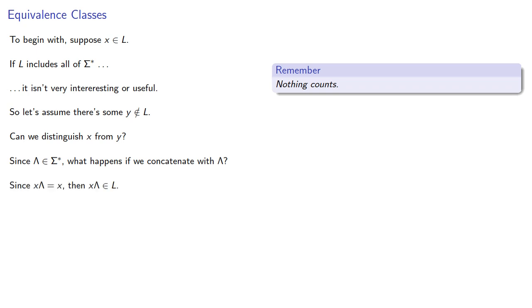Since X lambda is just X, then X lambda is in L, and since Y lambda is Y, then Y lambda is not in L. So X and Y are distinguishable with respect to L, since we can append the empty string and get one string that is and one string that isn't in our language.